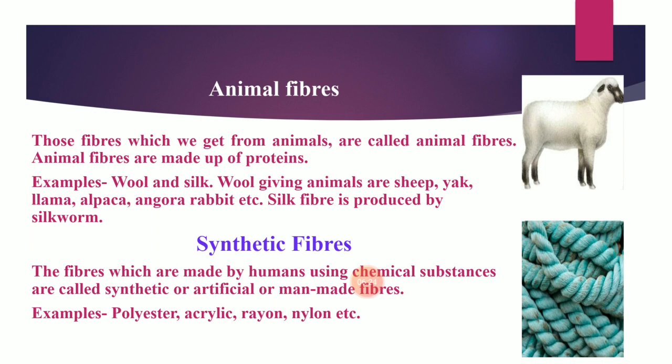Synthetic fibers, also called artificial or man-made fibers, are made up of chemical substances by human beings. That is why they are called man-made fibers. Examples of synthetic fibers are polyester, acrylic, rayon, and nylon.